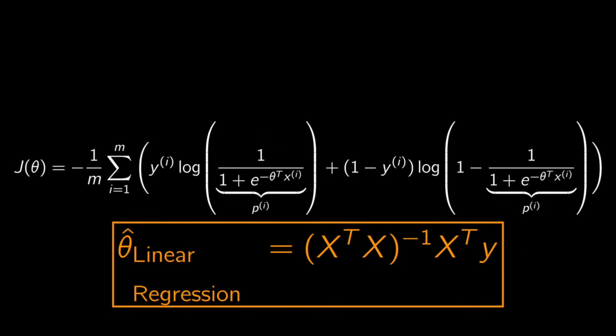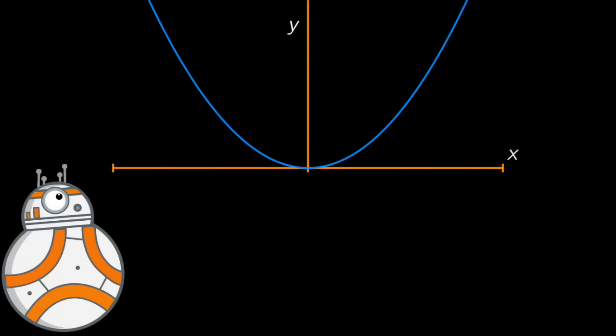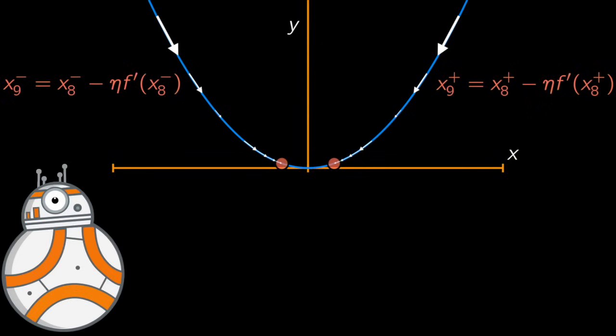But the good news is that this cost function is actually convex, so algorithms such as gradient descent are guaranteed to find the global minimum, given that the learning rate is not too large and you wait long enough. The partial derivatives of the cost function with respect to the jth model parameter theta j could be easily shown to be the following.